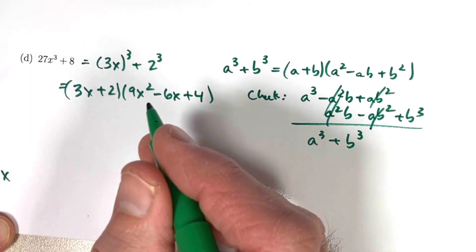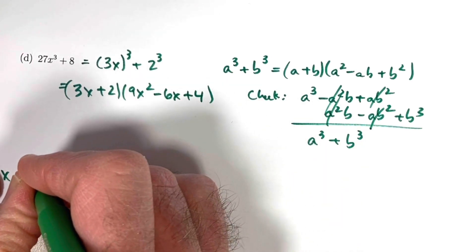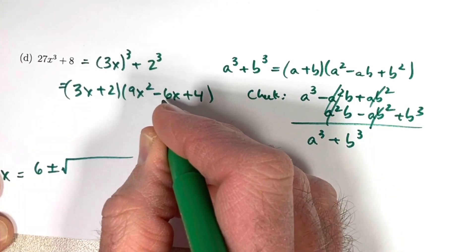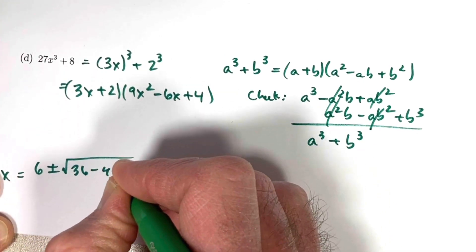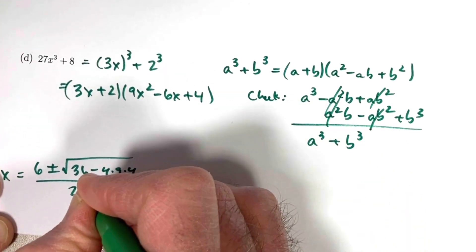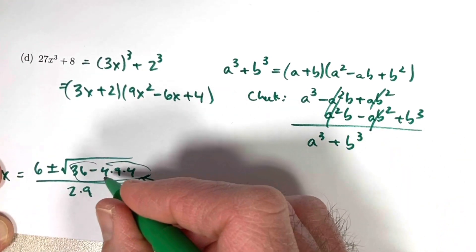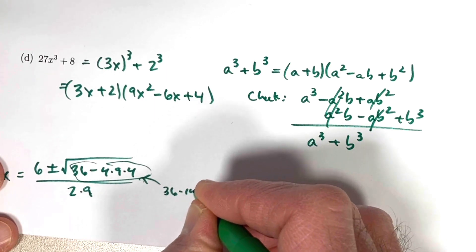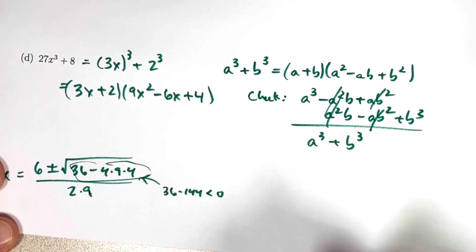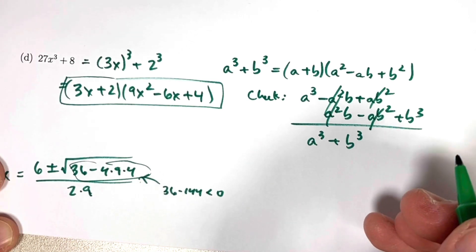In general, the trinomial factor might be factorable further, but here it cannot be factored over the real numbers. Using the quadratic formula on 9x squared minus 6x plus 4, the discriminant is 36 minus 4 times 9 times 4, which is 36 minus 144 — a negative number. The square root of a negative is imaginary, producing complex solutions. So the final factorization over the real numbers is 3x plus 2 times 9x squared minus 6x plus 4.